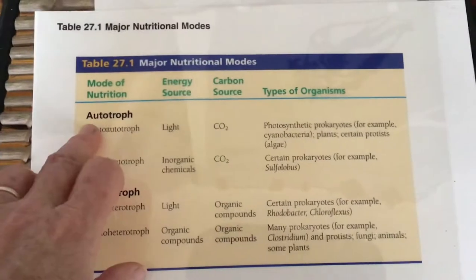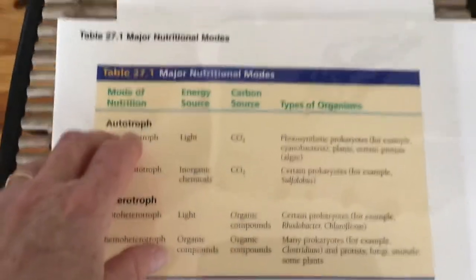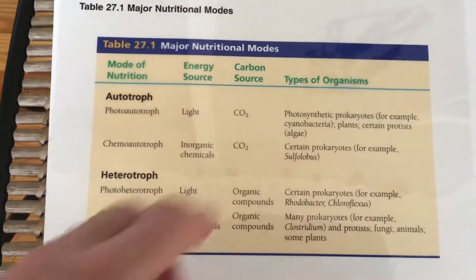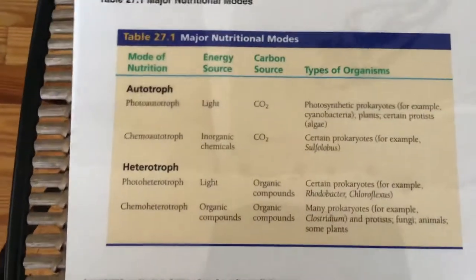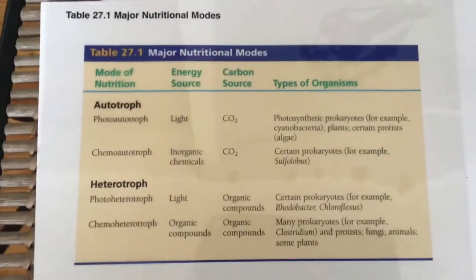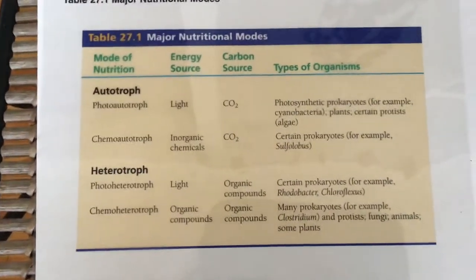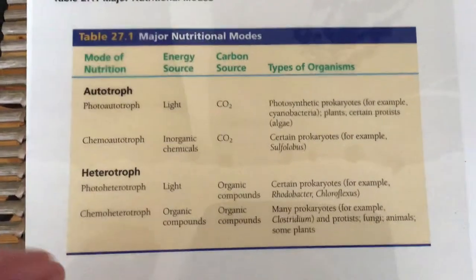Autotrophs are using inorganic compounds - for example, carbon dioxide would be an inorganic compound, same thing with water - to make organic compounds, mainly sugars that contain carbon, hydrogen, and oxygen.